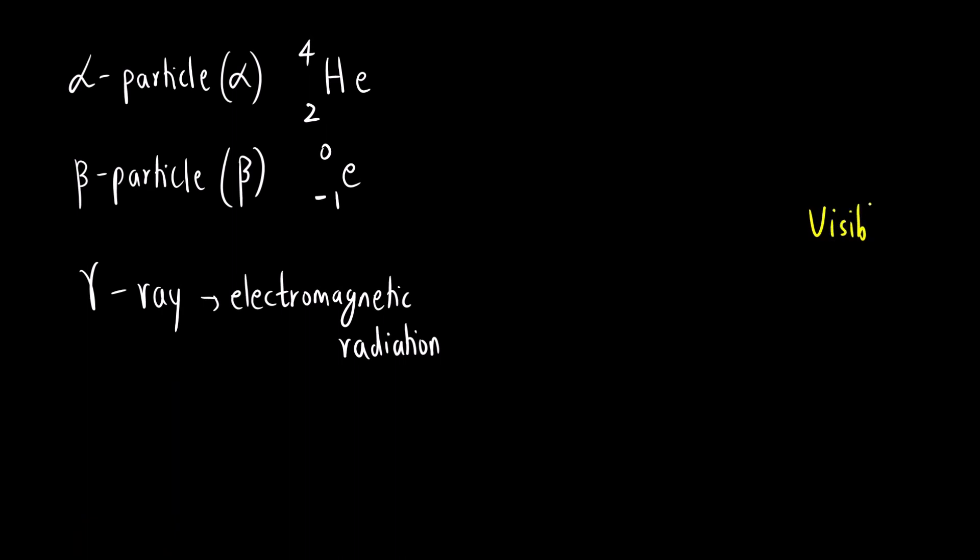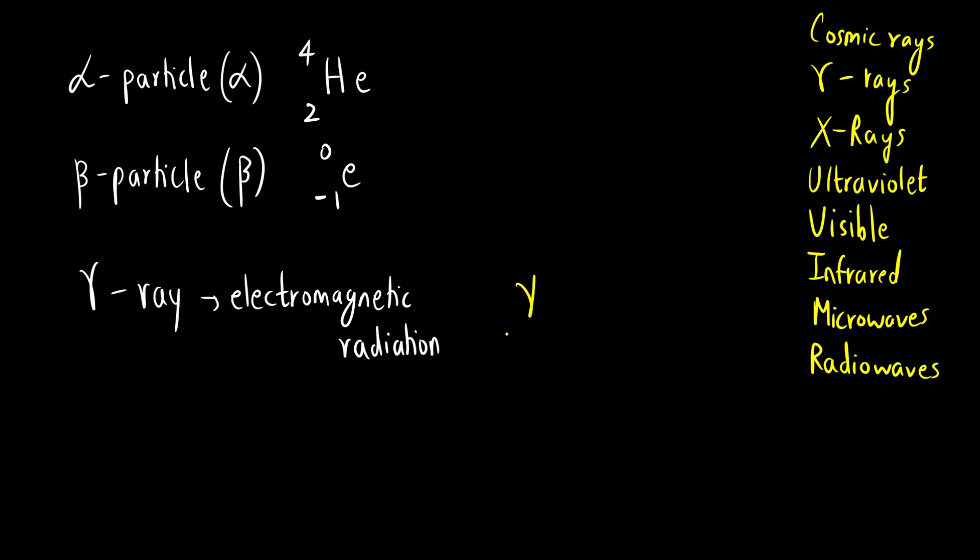It is one of the radiations of the electromagnetic spectrum. If you see, there is visible light, then there is infrared, then microwaves and then radio waves. If we go above visible light, the higher energy ones, first is ultraviolet, then we have x-rays and then we have gamma rays. This is the gamma rays that I am talking about and then we have cosmic rays. So what will be the mass and atomic number of gamma rays? It is an electromagnetic radiation. So there will be no mass and no charge.